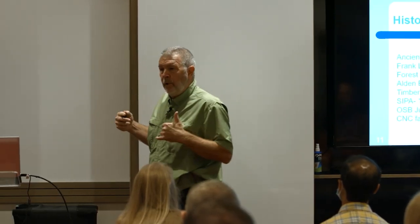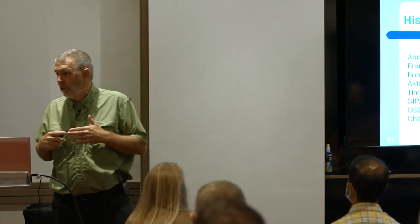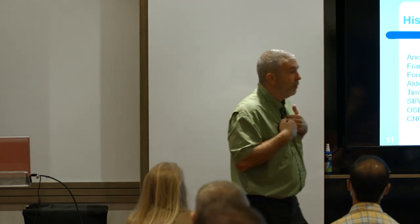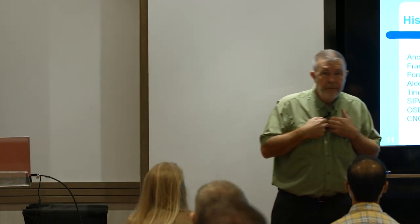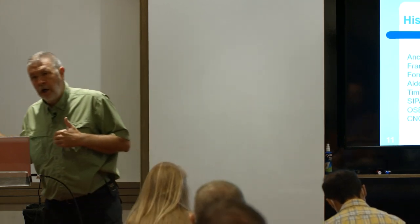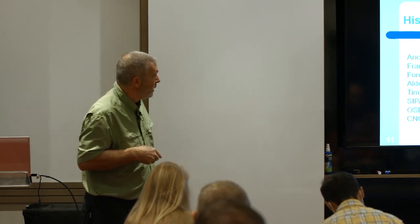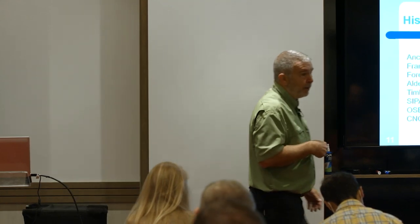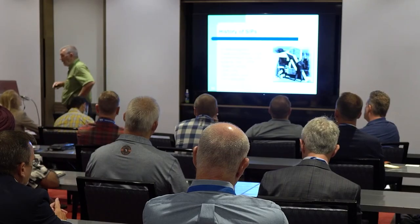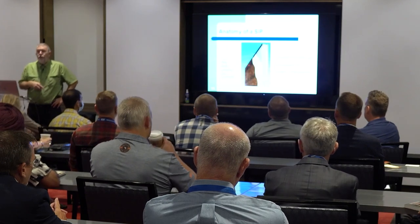Things really notched up when OSB manufacturers figured out how to make skins as large as 8 by 24 feet — what I refer to as a jumbo panel. That really allowed us to work toward the speed element where we could put panels up very quickly. Then along came CNC fabrication where we could start designing using CAD/CAM and BIM modeling. So what is a SIP?